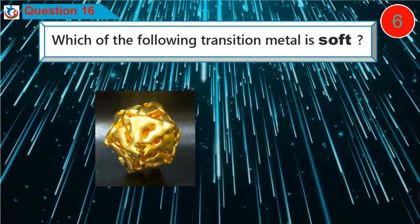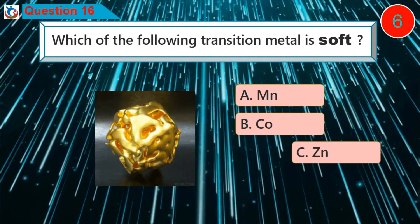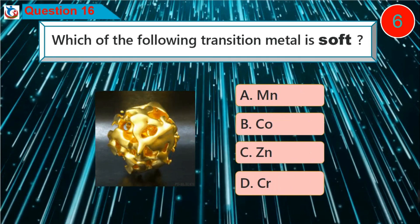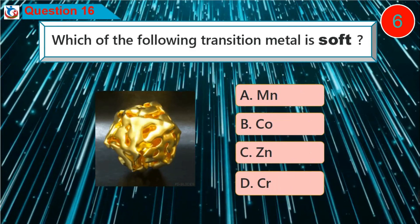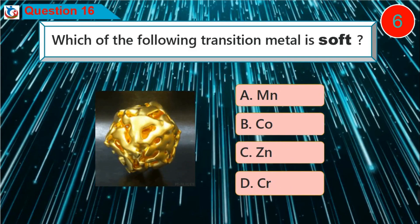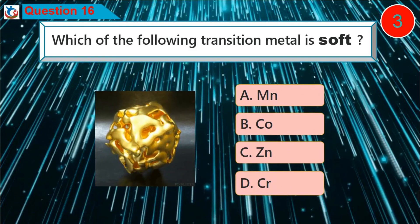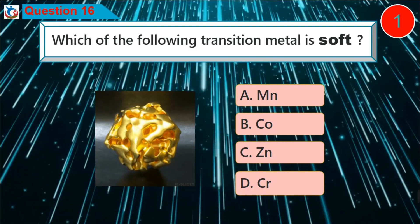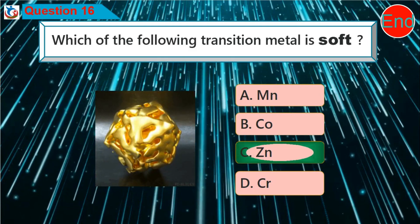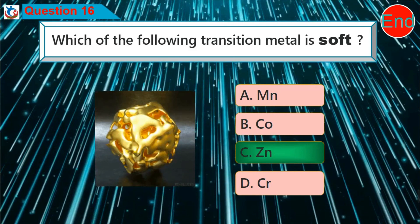Which of the following transition metals is soft? A. Manganese, B. Cobalt, C. Zinc, D. Chromium.